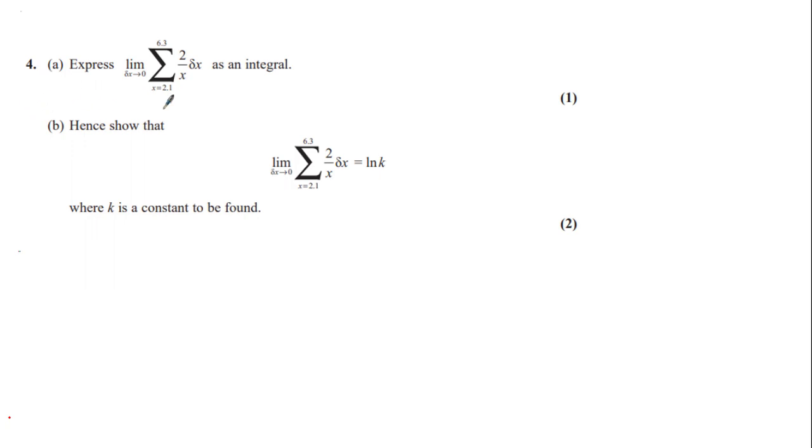So question four, part a. Here we have this Riemann sum of the function 2 over x multiplied by delta x for values of x from 2.1 up to 6.3, taking the limit as delta x goes to 0.